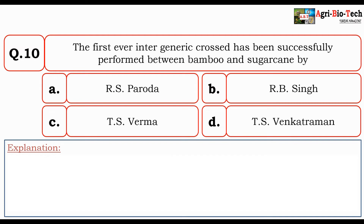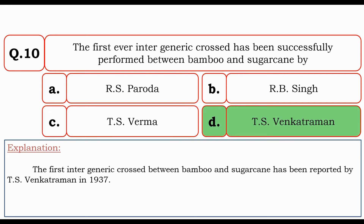Next question: The first ever intergeneric cross has been successfully performed between bamboo and sugarcane by — R.S. Paroda, R.B. Singh, T.S. Verma, or T.S. Venkatraman? The correct answer is E.S. Venkatraman. The first intergeneric cross between bamboo and sugarcane was reported by E.S. Venkatraman in 1937.